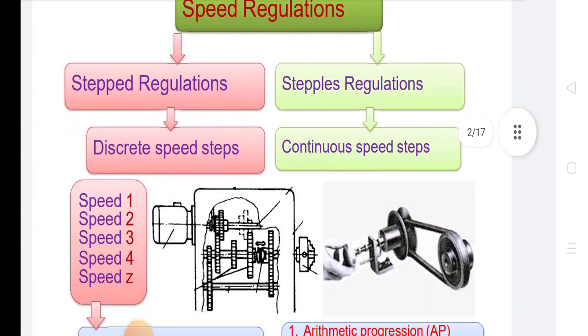In steps regulations, there are discrete speed steps like speed 1, speed 2, speed 3, speed 4, and speed Z. In stepless regulations, there are continuous speed steps.